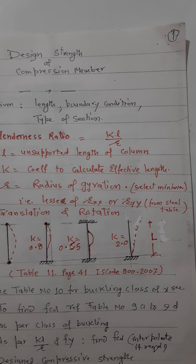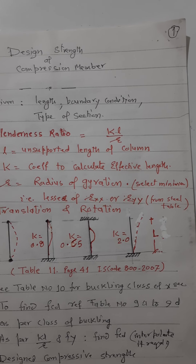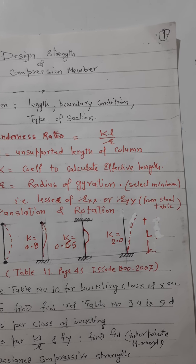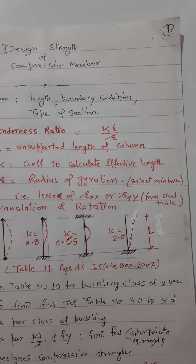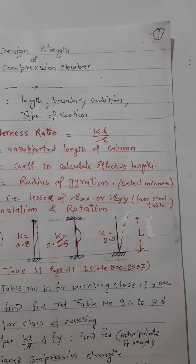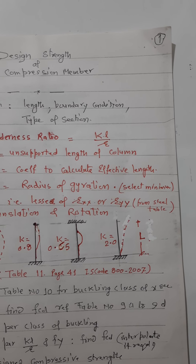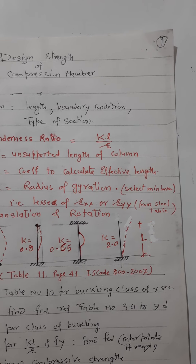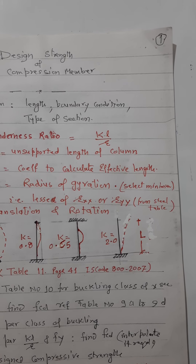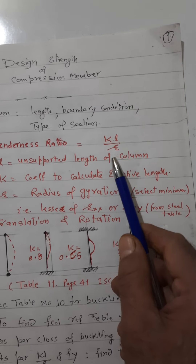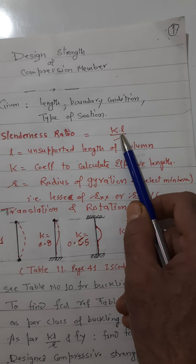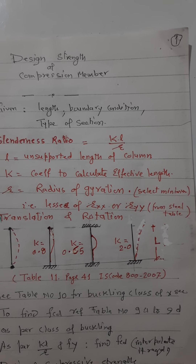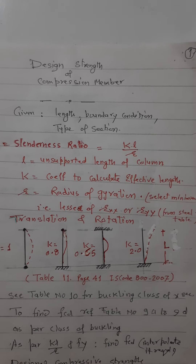In the steel table, I_xx, I_yy, area of cross-section, r_xx, and r_yy are all provided. Values r_uu and r_vv are also given but we are not concerned with those. We are confined to r_xx and r_yy. The most important thing is that we must select the minimum of r_xx and r_yy — whichever is minimum is selected as r_minimum. Then kL divided by r_minimum is the slenderness ratio, denoted by λ.